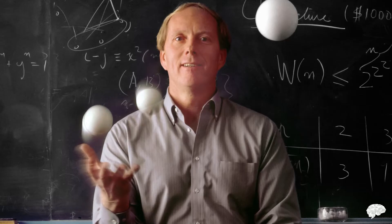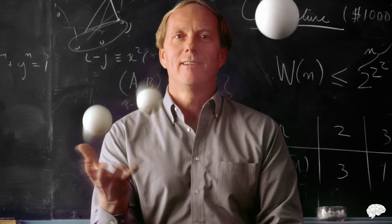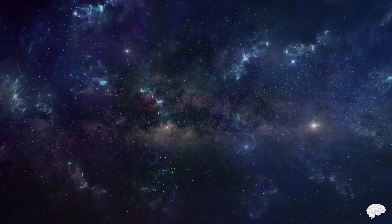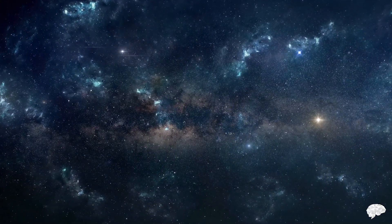Graham worked out there was a dimension in which that was guaranteed, and that this dimension could not be any higher than another number he calculated. But this upper bound on the number of dimensions needed was freakishly large — so large the entire universe is nowhere near big enough to write it down. Mathematicians love saving themselves time and don't like writing out long numbers. So, just as 6 to the power of 50 saves you writing 50 sixes, there's a notation to describe what we now know as Graham's number.